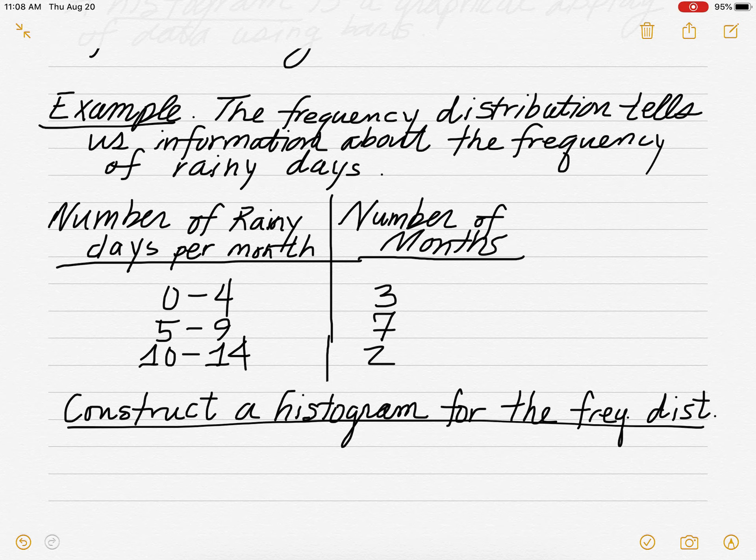So on the left-hand side, you have your classes, which tells us the number of rainy days in a month. So you can have from 0 to 4 rainy days in a month, 5 to 9 rainy days in a month, 10 to 14 rainy days in a month. And apparently, in this particular location, you don't have more than 14 rainy days. So we don't talk about 15 to 19 rainy days. So there are no more than 14 rainy days in a month. So it must not be a super rainy location, right?